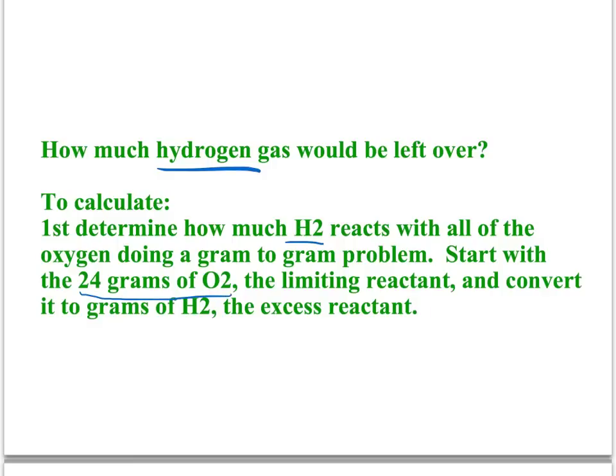You start with the 24 grams of oxygen, the limiting reactant, and you convert it to grams of hydrogen, the excess reactant. This will tell us how much hydrogen is actually used in the reaction.